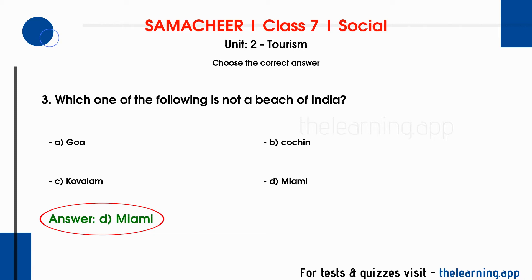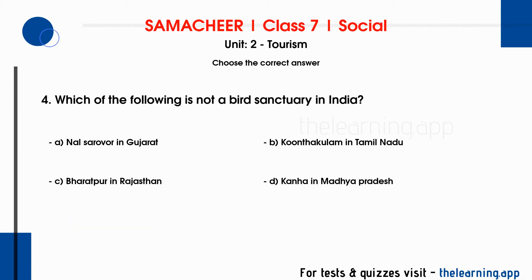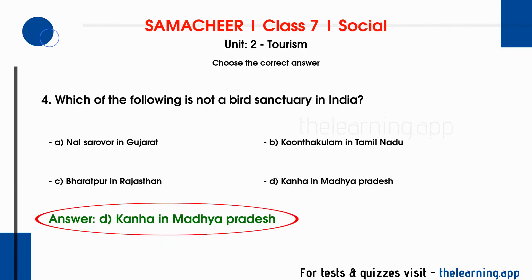Fourth question: which of the following is not a bird sanctuary in India? Options are A) Nal Sarovar in Gujarat, B) Kuttankulam in Tamil Nadu, C) Bharatpur in Rajasthan, D) Kanha in Madhya Pradesh. Correct answer is option D, Kanha in Madhya Pradesh.